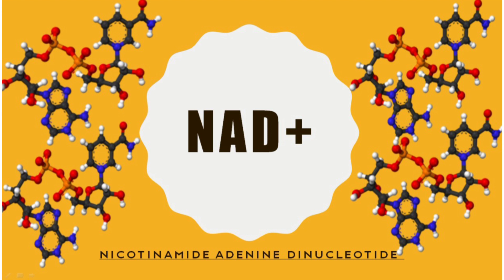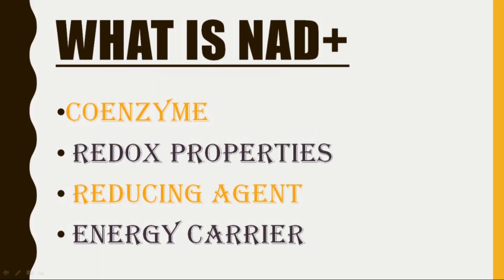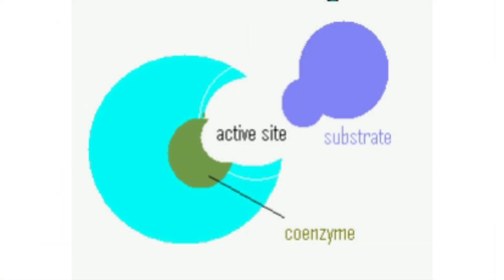The first thing to understand about today's topic is: what is NAD? Just like any other molecule in our body, NAD is also a molecule present in our blood plasma. But there are some specific terms used for the NAD molecule — it's a coenzyme. A coenzyme means an organic molecule other than protein, which is temporarily attached to the enzyme. When the function is performed, it gets detached from the enzyme. You can see in this picture that the coenzyme has its particular region where it fits with the enzyme.